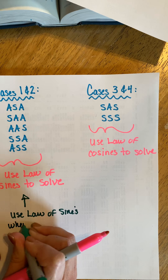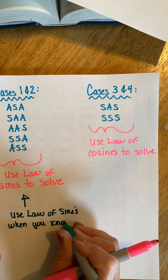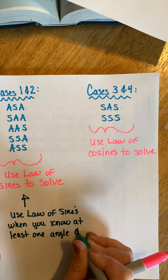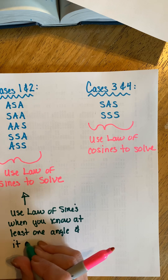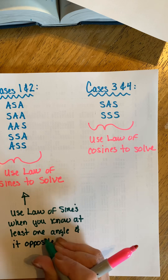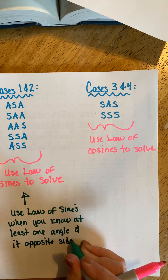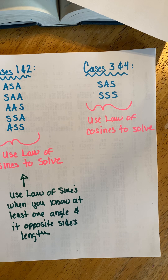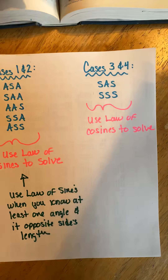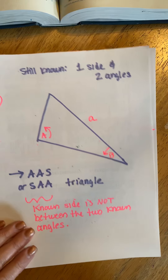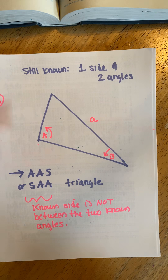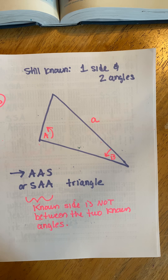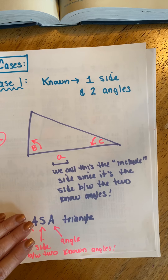This type of triangle is called an Angle-Side-Angle triangle, or ASA. The S falls between the two A's, indicating the side is included between the two known angles. So Case 1a is: known side is between the two known angles — this is an ASA triangle.